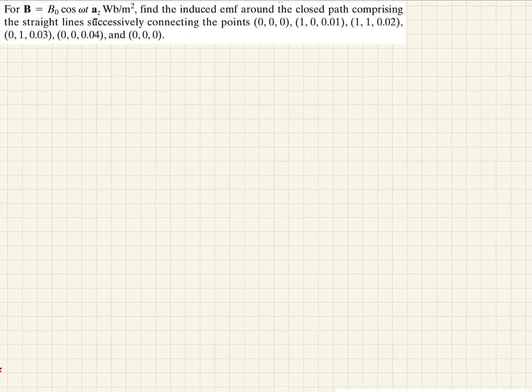In this problem we are given a magnetic field defined as B = B₀cos(ωt) in the z direction. We're also given a closed path defined by six points.